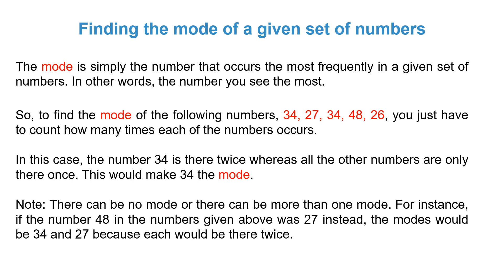So to find the mode of the following numbers: 34, 27, 34, 48, and 26, you just have to count how many times each of the numbers occurs. In this case, the number 34 is there twice, whereas all the other numbers are only there once. This would make 34 the mode.